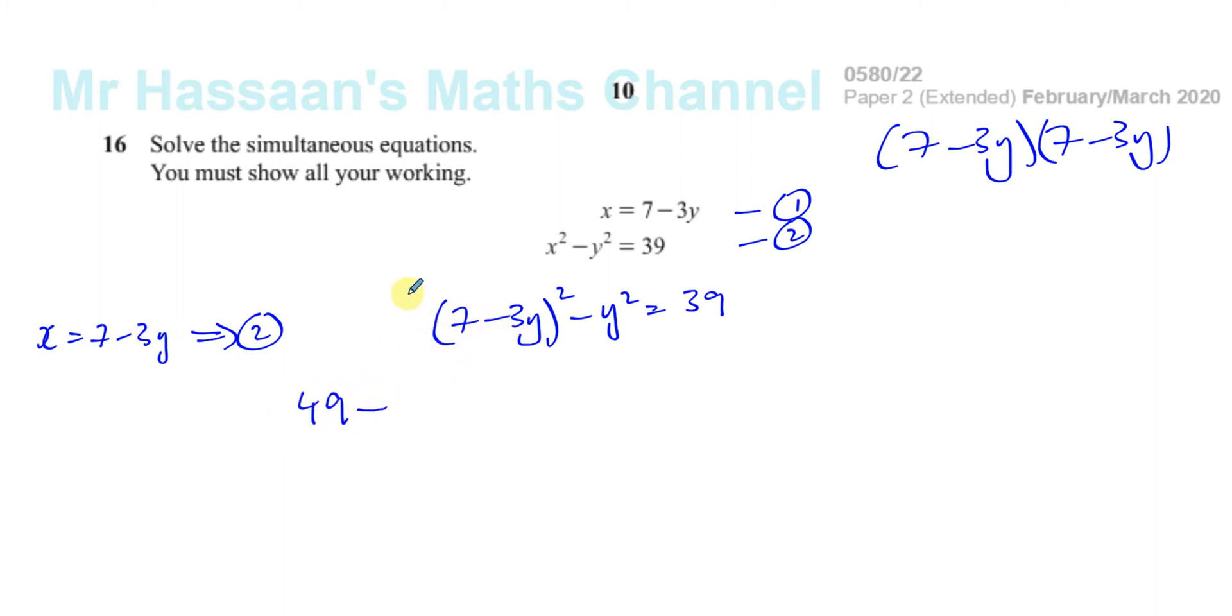So basically what you're going to have is 49 minus, now you're going to have 2 times 7 times minus 3Y, so that's going to be minus 42Y because 2 times 3 is 6, 6 times 7 is 42, minus 42Y and you're going to have plus 9Y squared. Because when you square, when you do minus 3Y times minus 3Y, you get plus 9Y squared and you've got a minus Y squared there and you've got 39.